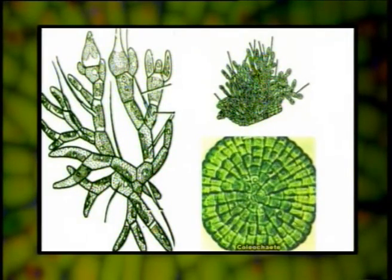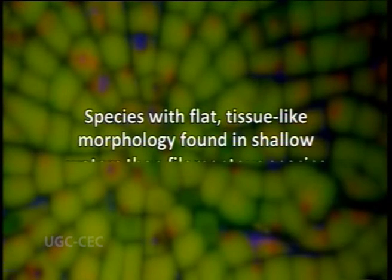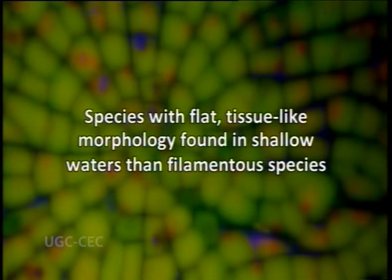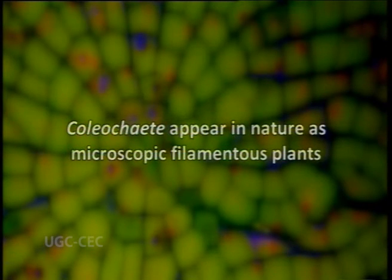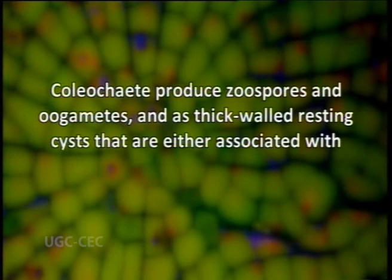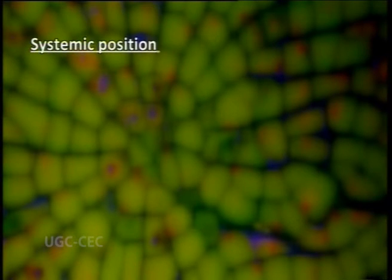The genus includes forms with prostrate and erect branched filaments. Branched filaments adhere to form pseudoparenchyma, and parenchymatous thalline species of Coleochaete with a flat tissue-like morphology are found more often in shallow waters than the filamentous species, indicating a competitive advantage. Coleochaete appears in nature as microscopic filamentous plants that produce zoospores and oogametes, as well as thick-walled resting cysts associated with vegetative filaments or free in sediments.